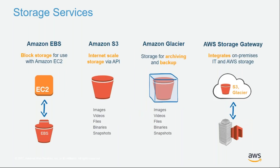We have multiple storage services. Amazon EBS is block storage used in conjunction with virtual machines — similar to the hard disk on a physical server — where you store application data that must be persistent. Amazon S3 is internet-scale storage accessible via API, ideally used to store any kind of object: images, videos, files, snapshots, or binaries. Amazon Glacier is a long-term archival cold storage solution with low retrieval times. Amazon Storage Gateway allows you to integrate cloud-based storage with your on-premise storage.